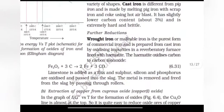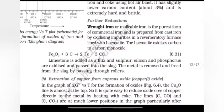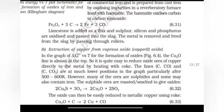Wrought iron or malleable iron is the purest form of commercial iron and is prepared from cast iron by oxidizing impurities in a reverberatory furnace lined with hematite. The hematite oxidizes carbon to carbon monoxide. Fe2O3 plus 3C gives 2Fe plus 3CO. Limestone is added as a flux and sulfur, silicon and phosphorus are oxidized and passed into slag. The metal is removed and freed from slag by passing through rollers.